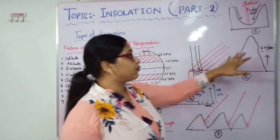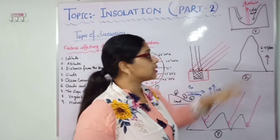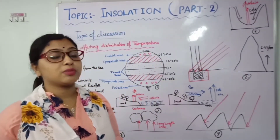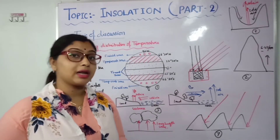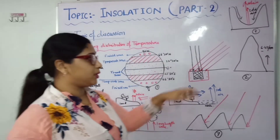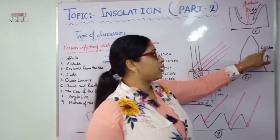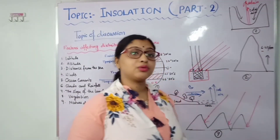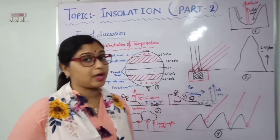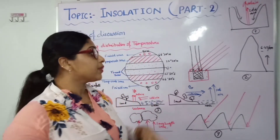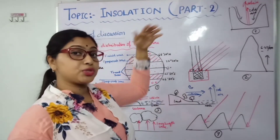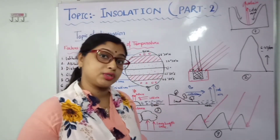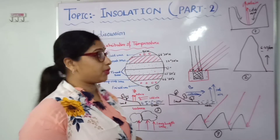The rate at which temperature decreases is 6.4 degrees centigrade per kilometer. So we can see that higher altitude means lower temperature and lower altitude means higher temperature.